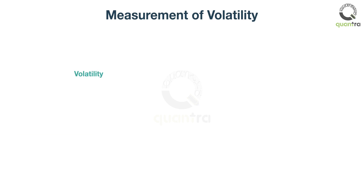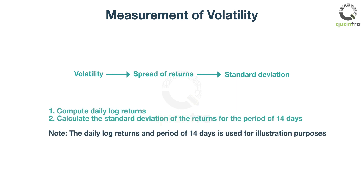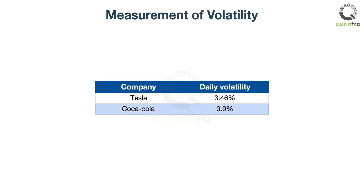How do you measure volatility? Since volatility is how spread out the returns are, the standard deviation of the log returns can be used to measure volatility. The steps are shown on screen. Since you use daily log returns to calculate the volatility, it is called daily volatility. The daily volatility of Tesla is 3.46% and Coca-Cola is 0.9%.